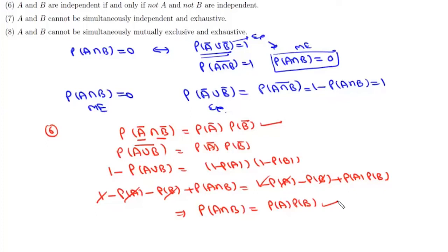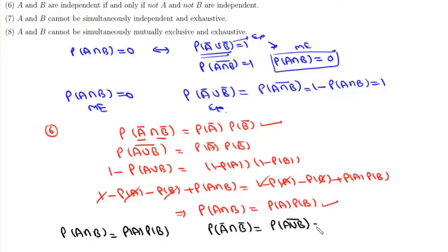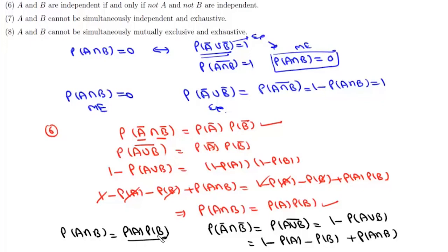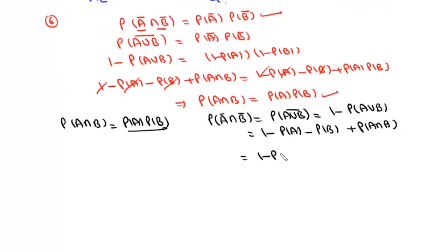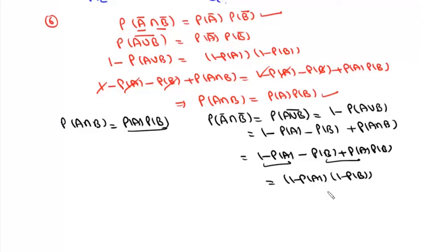We can prove the vice versa as well. Assuming P(A ∩ B) = P(A) · P(B), we write P(A⁰ ∩ B⁰) = P(A ∪ B)⁰ = 1 − P(A ∪ B) = 1 − P(A) − P(B) + P(A ∩ B) = 1 − P(A) − P(B) + P(A) · P(B). Factorizing, this becomes (1 − P(A))(1 − P(B)) = P(A⁰) · P(B⁰), so A⁰ and B⁰ are independent. Statement 6 is also correct.